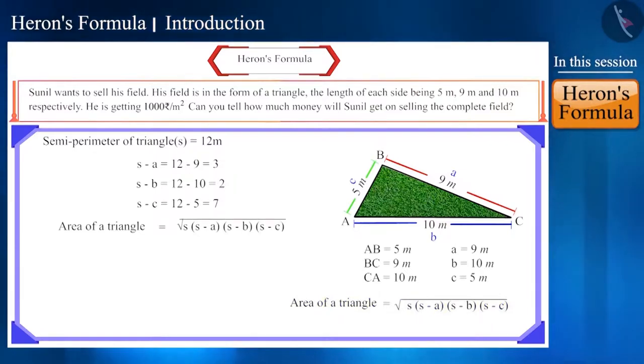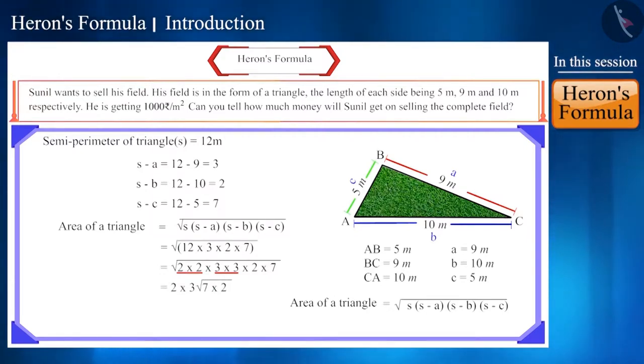According to Heron's formula this will be the area of triangle ABC. Here we can write 12 as 2 into 2 into 3. And now if we take out a number from the pairs of 2 and 3 from the bracket, that is 6 root 14 square meter.